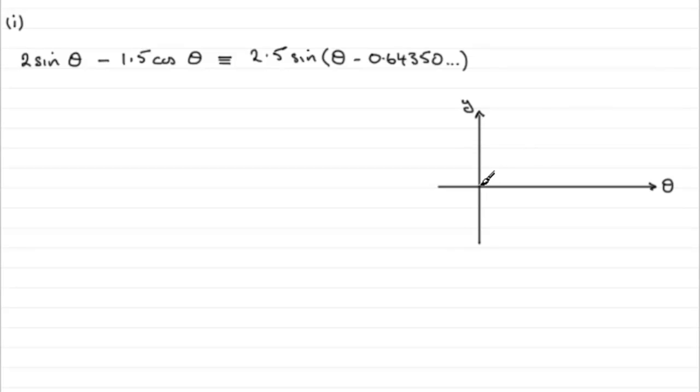Sine theta, should remember then, is a standard graph looking something like this. Going between the 1 here and minus 1 down here. And it peaks at 90 degrees, or in radians, that's pi upon 2. And crosses here at 180 degrees, or pi radians.